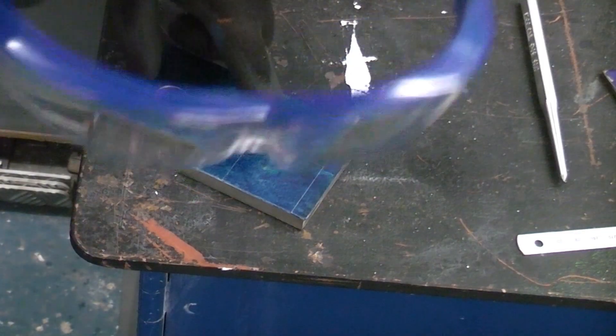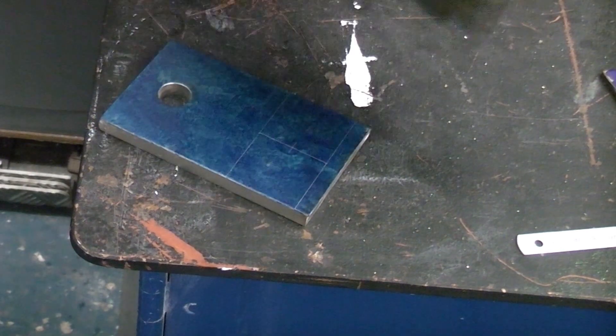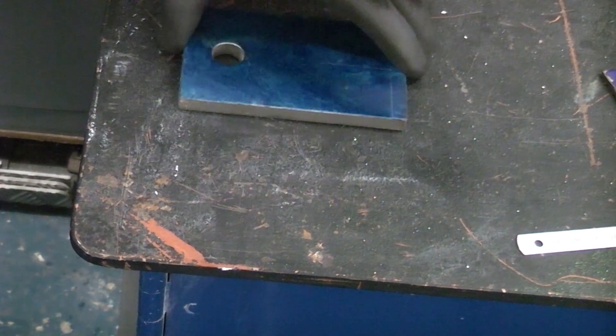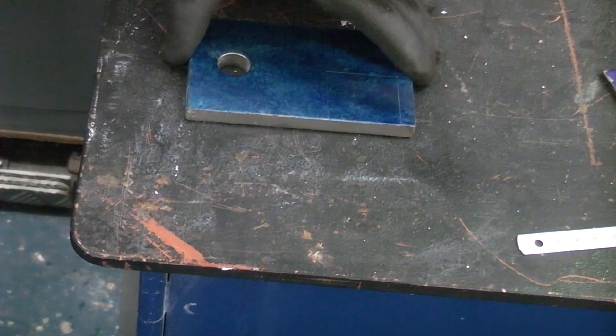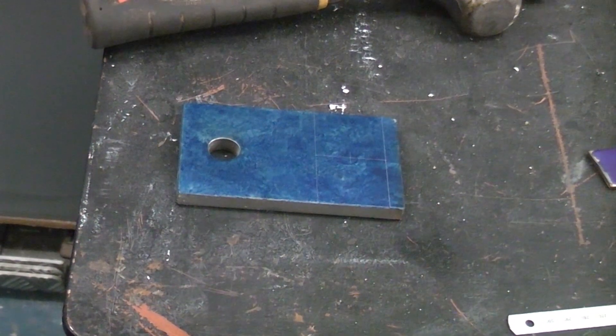Before we centre punch that mark we're going to put a pair of safety glasses on. When you do this it's important that the work you're centre punching is on something solid. And where that is positioned right now on the bench is exactly where the leg is, so it is incredibly solid at that point.